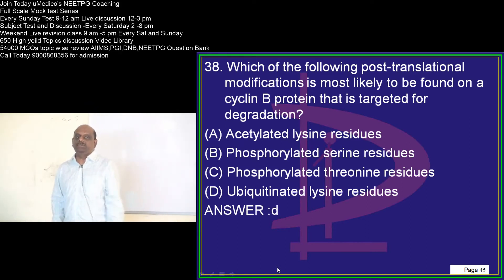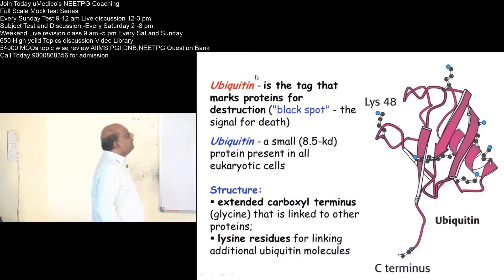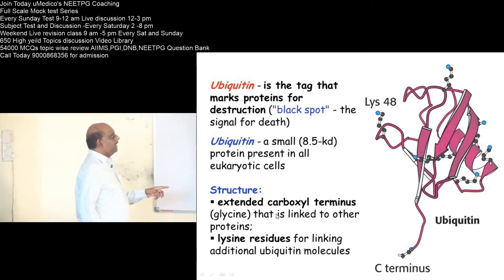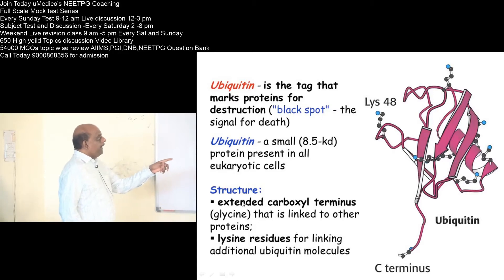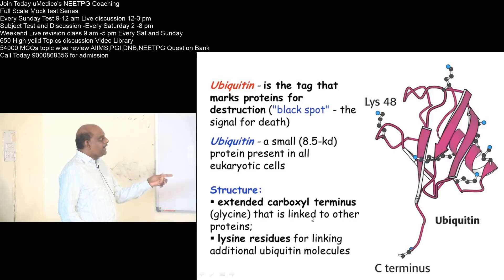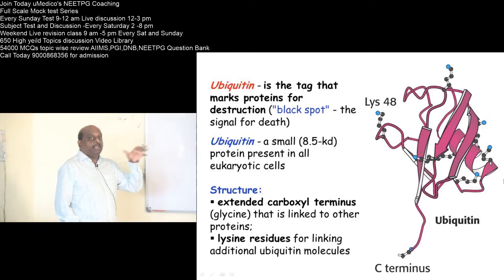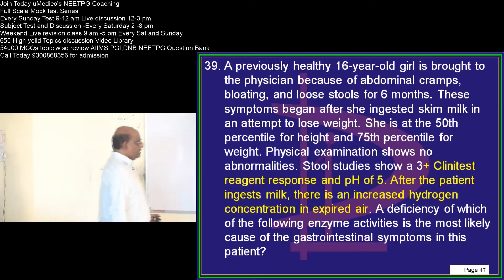Ubiquitinated lysine residues — lysine is an amino acid to which ubiquitin attaches. When ubiquitin attaches to the lysine, it can attach to the lysine residues or to the extended carboxyl terminus of glycine. Those ubiquitinated amino acids are the label for the body to know that a protein is meant for destruction.